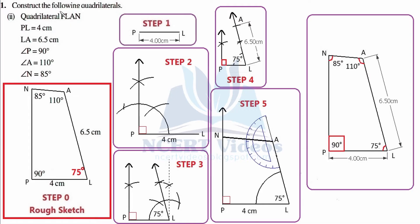Question number first: construct the following quadrilateral. Here we are on the second part of exercise 4.3, chapter 4, practical geometry, mathematics class 8th. In this case we have to construct a quadrilateral whose name should be PLAN. In order to construct this quadrilateral PLAN, we need to make a plan — first of all we must check which information we are provided in the question.